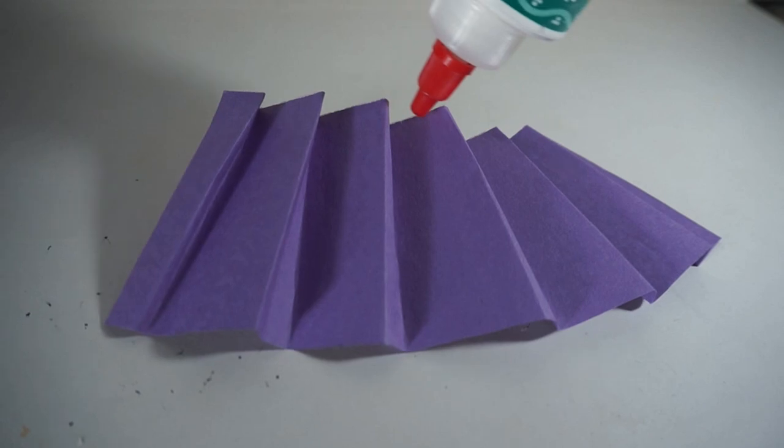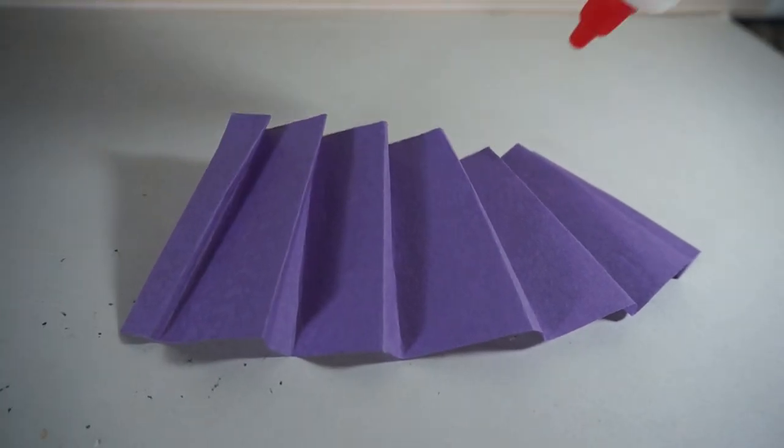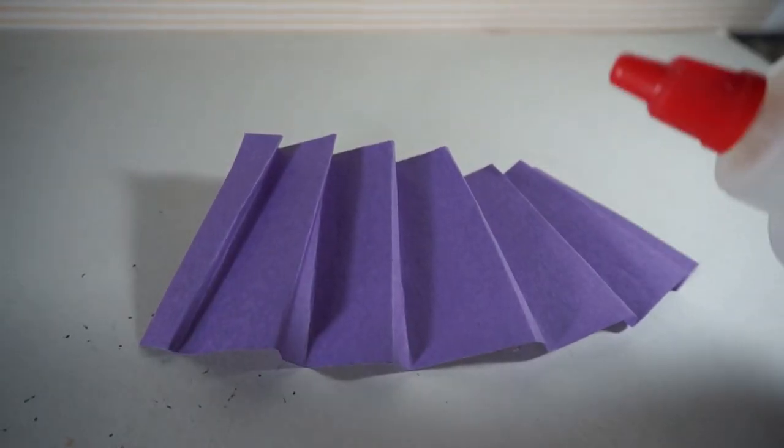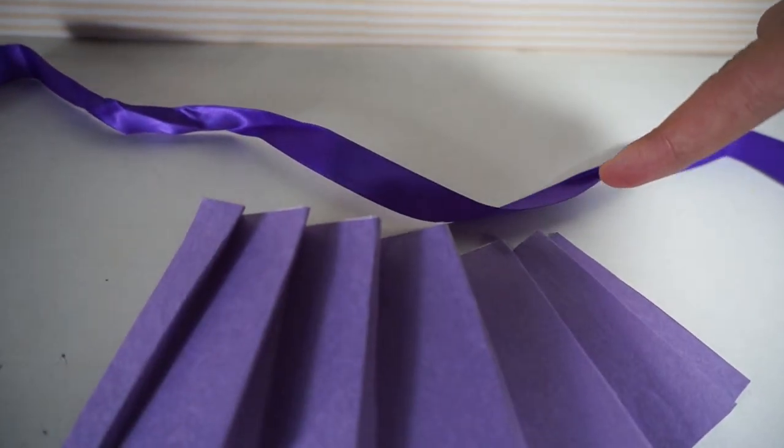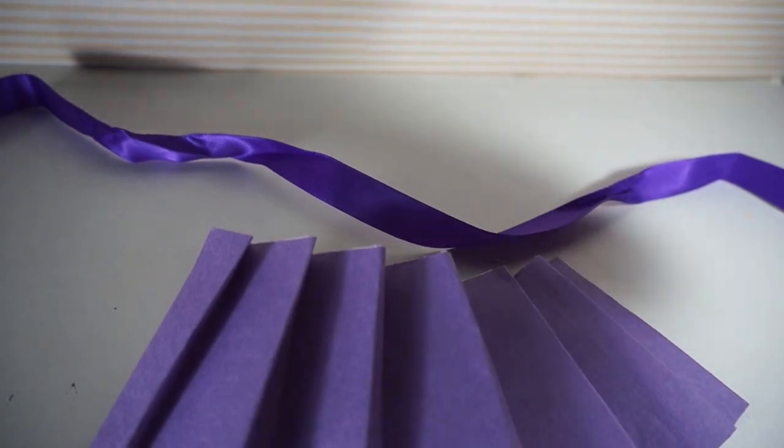So what I'm going to do is just put a line of glue across the top and that is where the ribbon is going to go. I would suggest cutting your ribbon pretty long so you want it to fit around here and have enough slack to be able to tie it.